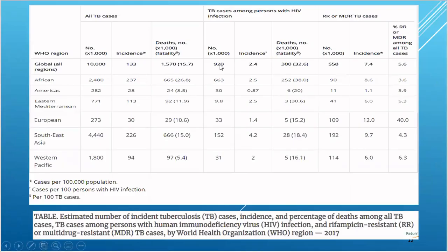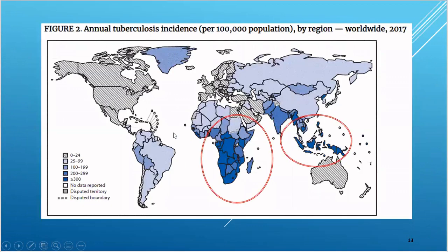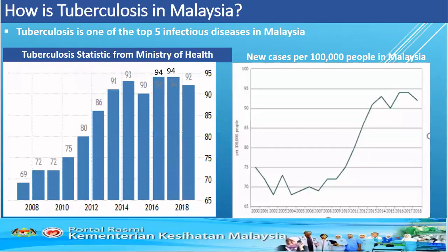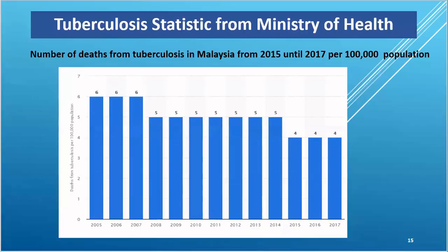Here are the cases per 100,000 population. As you can see, Africa and Southeast Asia are the parts of the world with the highest rate of incidence cases. In Malaysia, new cases per 100,000 people were increasing and then decreased in the year 2018. Good news is the number of deaths from TB in Malaysia has been in a downward trend.